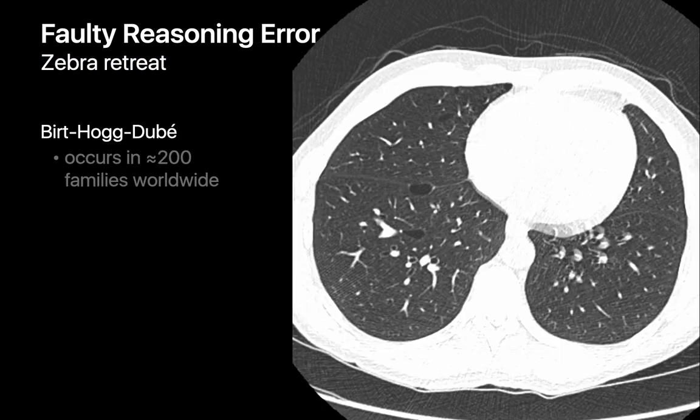This case of Birt-Hogg-Dubé, which is a rare syndrome characterized by lower lung cysts, renal tumors, and skin lesions, was originally interpreted as a relatively unremarkable chest CT with just a few blebs and air cysts.